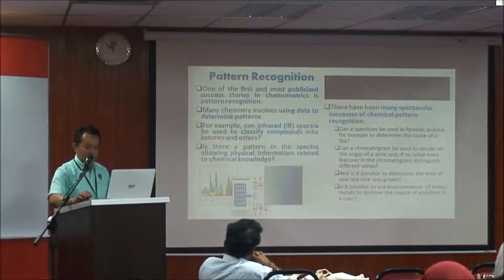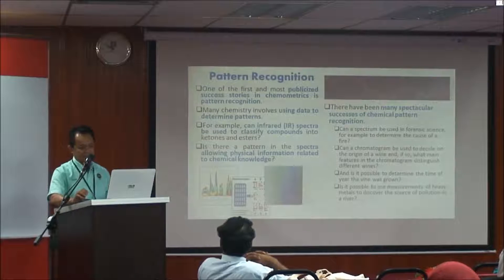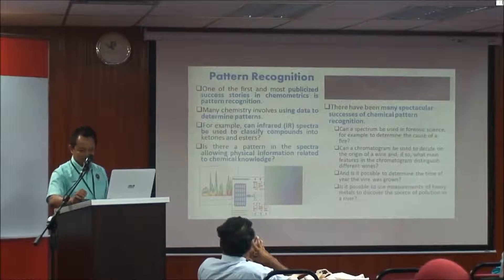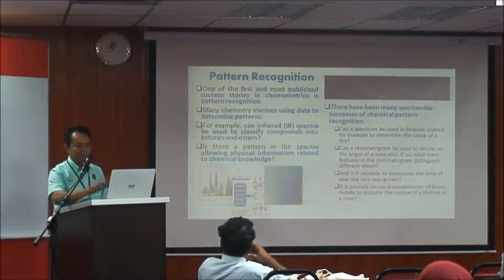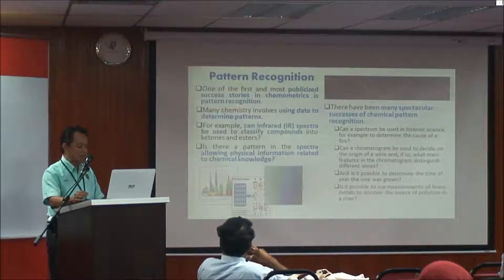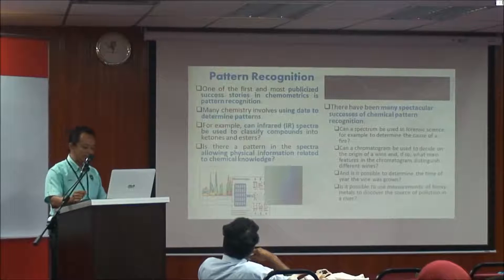Pattern recognition — when we get the data and draw a line graph, we can see the pattern. This is what we call variation in the data, different values of observation. For example, dissolved oxygen concentration monitored hourly: first hour 1.0, second hour 0.98 — the difference in value, when plotted as a line graph, shows patterns. One of the first success stories in chemometrics is pattern recognition, such as correlating spectra to classify compounds into ketones and esters.